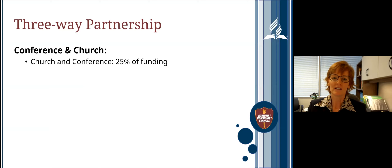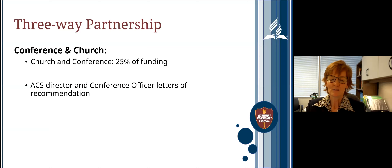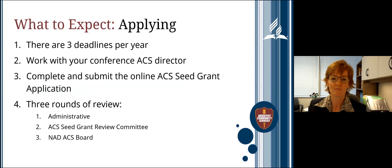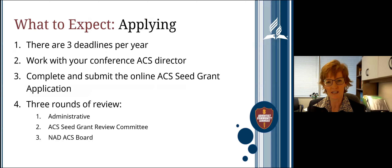The other parties in the project funding are the local conference and the church where the ACS ministry is located. Together they need to provide funding for at least 25% of the eligible budget. There is no minimum or maximum required for each entity, but both should be represented in some way. In addition, letters of recommendation are required from both the conference ACS director and a conference officer — the president, treasurer, or vice president.